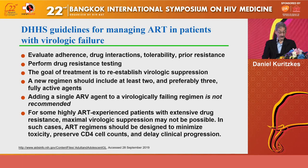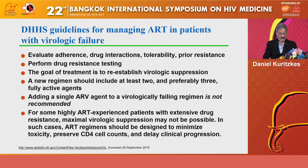Adding a single new drug to a virologically failing regimen is not recommended, because it recapitulates the prior history of virtual monotherapy — if the wrong single drug is added to a failing regimen, the likely outcome is incomplete viral suppression and loss of that new drug. For some highly treatment-experienced patients with extensive drug resistance, maximal virologic suppression may not be possible, but persisting with therapy designed to minimize toxicity and preserve CD4 cell counts may still delay clinical progression.